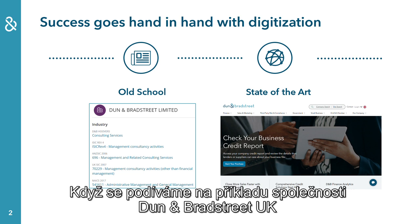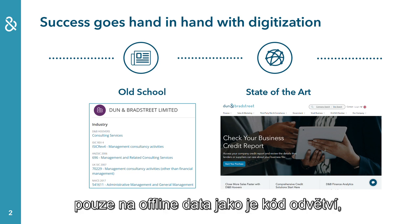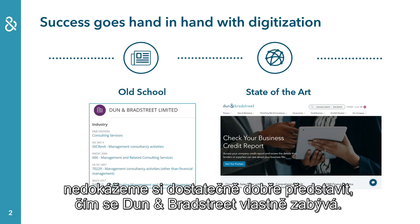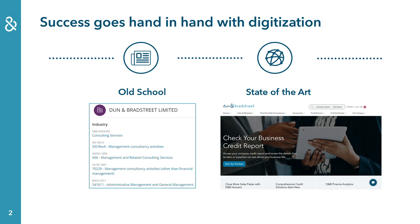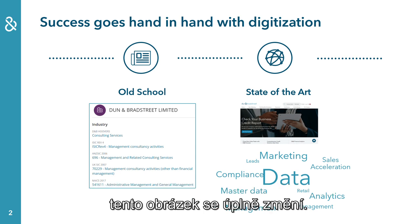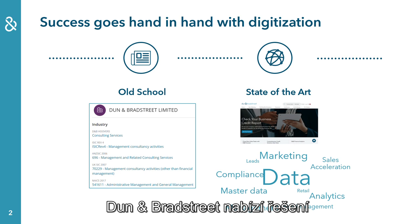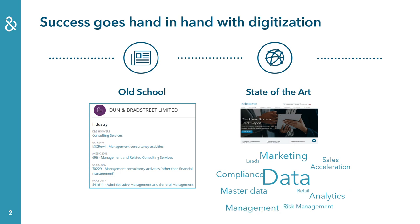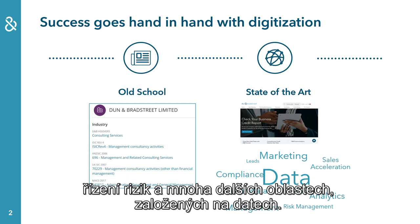Following the example of Dun & Bradstreet UK: by looking only at offline data like the industry code, you are not able to understand what Dun & Bradstreet really offers. By including online data from the company's website, the picture totally changes. Dun & Bradstreet offers solutions in the area of sales acceleration, risk management, and many more, all based on data.